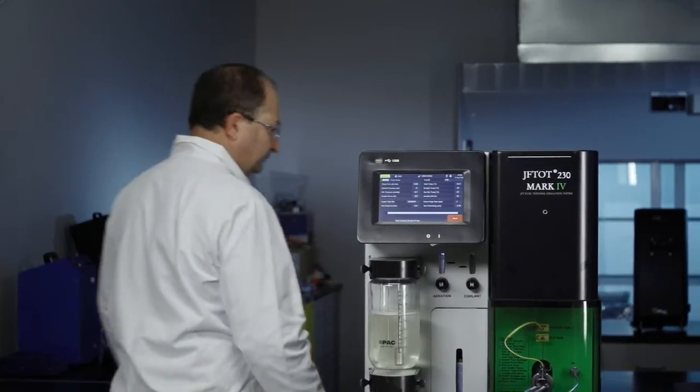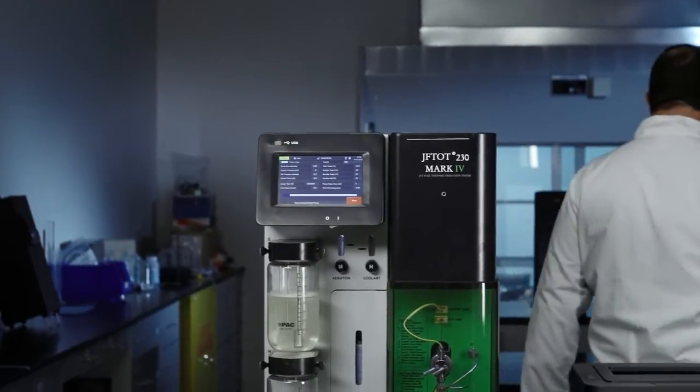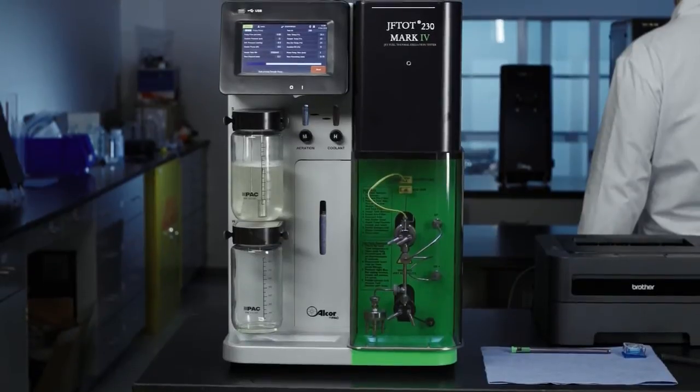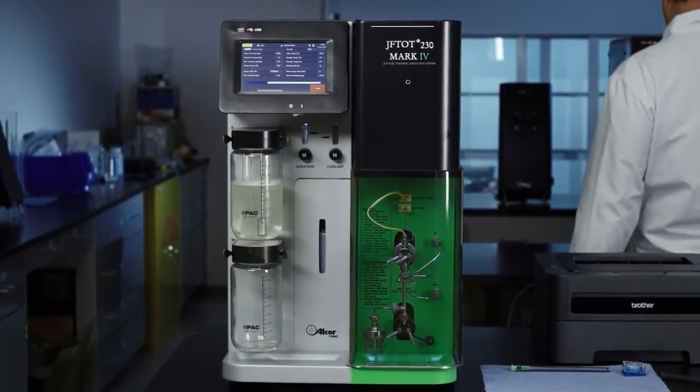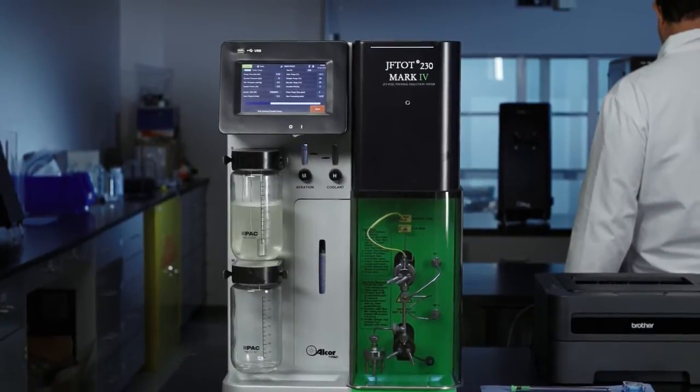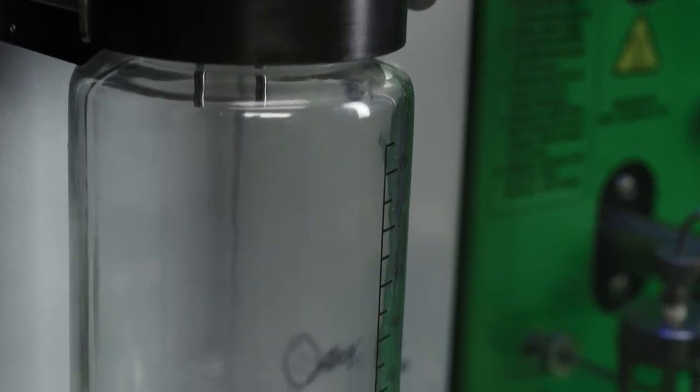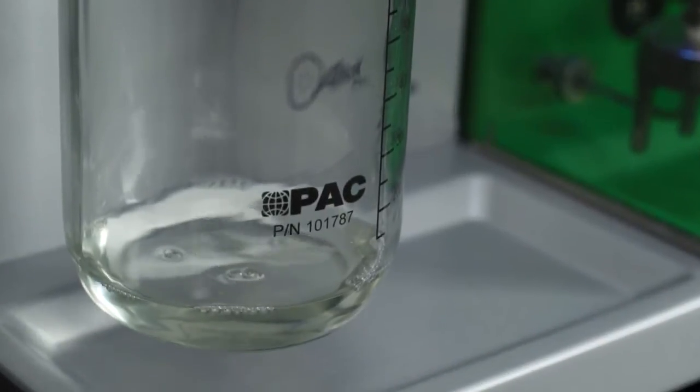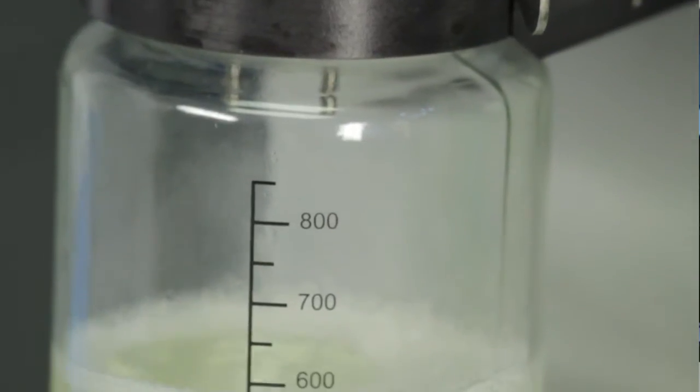One of the features that's different in the new JeffTot is that you no longer need to be in front of the unit. It will run automatically to the end of the test. Once the test is complete, the fuel in the lines of the test section will automatically be flushed out to keep the jet fuel from leaking out of the lines when you take the instrument apart.